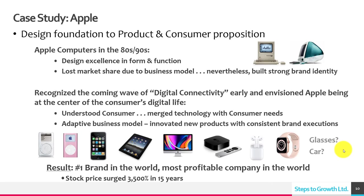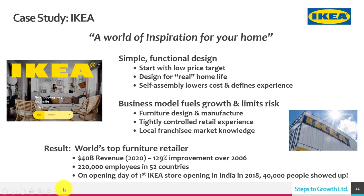Apple has a very adaptive business model — once they have the consumer, they surround them with everything they might need. They innovate new products all the time, but always with consistent brand executions. From the original iPod music player, to the iPhone as a game changer around 2007, to the iPad as a completely new product, continuing to evolve iMacs, then TV, earbuds, wireless connectivity, and watches. Now they could go into whatever they want. People queue overnight to buy the latest iPhone — essentially basically the same product — which is incredible. The result: they're the number one brand in the world and the most profitable company in the world.